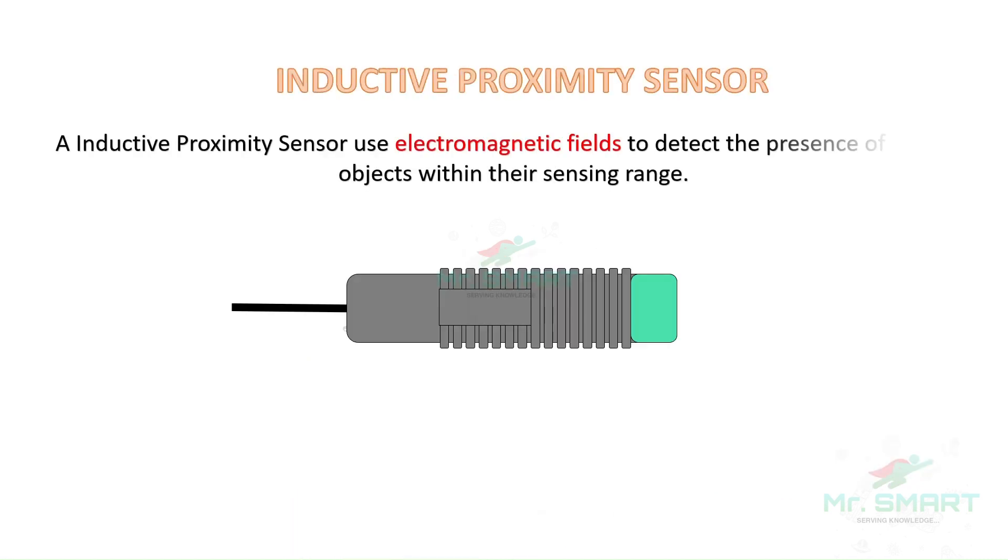An inductive proximity sensor is a non-contact type sensor which uses electromagnetic fields to detect the presence of metallic objects within their sensing range. To learn more about electromagnetism in detail, watch our previous video. Link is in description.